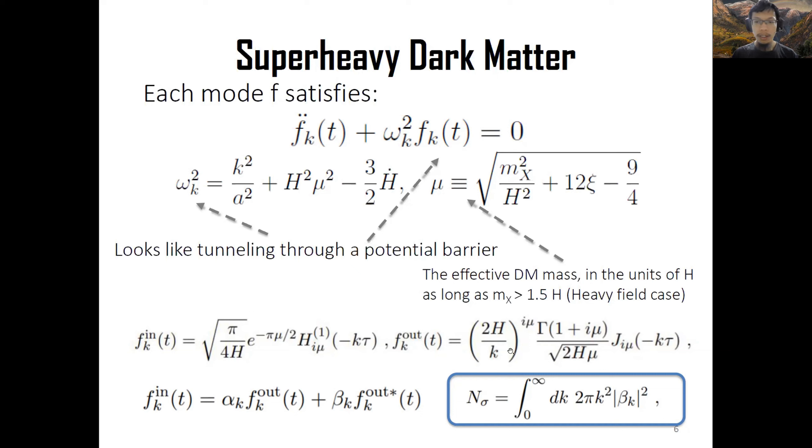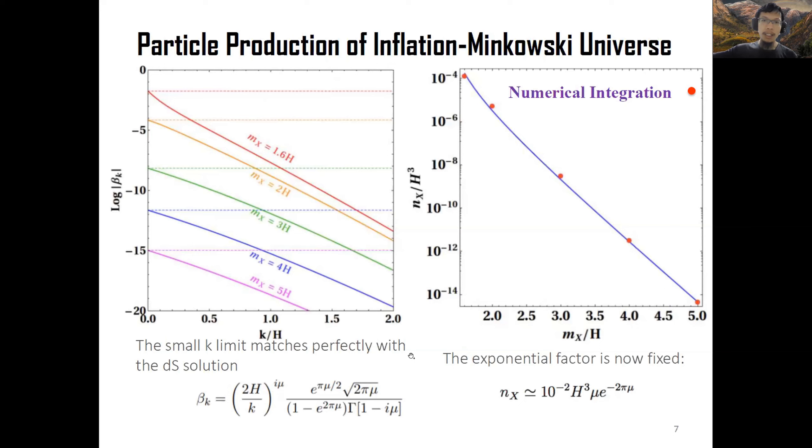Starting from standard vacuum solutions during inflationary time, by doing the Bogoliubov transformation, eventually you will find out the dark matter production is related to the beta squared. The beta is actually the amplitude of the mode that's coming out asymptotically at the end of inflation. We use the method called Stokes line combined with a semi-analytical or analytical toy model of our universe - the smooth transition between de Sitter space and Minkowski universe.